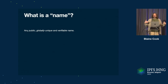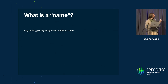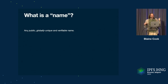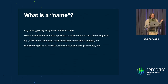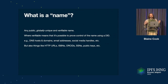Let's step back a little bit and talk about what a name is. As far as I can tell, a name — in this context — is a public, globally unique, and verifiable name. Verifiable means that it's possible to prove control of the name using a DID. So, for example, DNS hosts and domains, email addresses, social media handles — all that kind of thing are names.